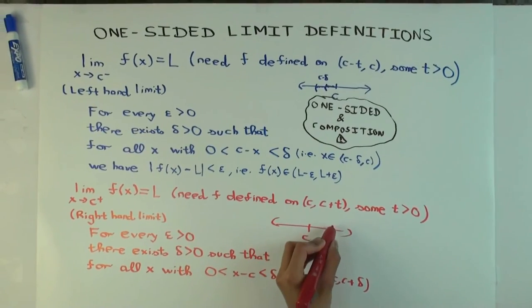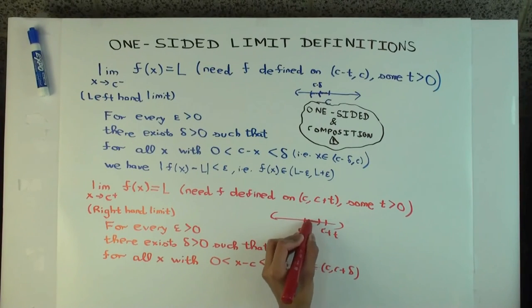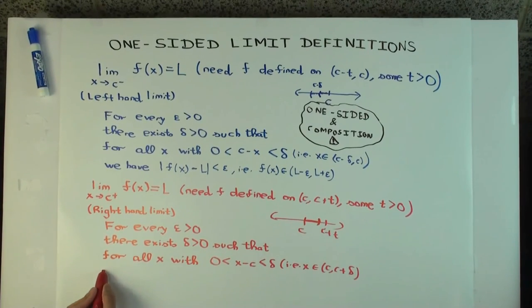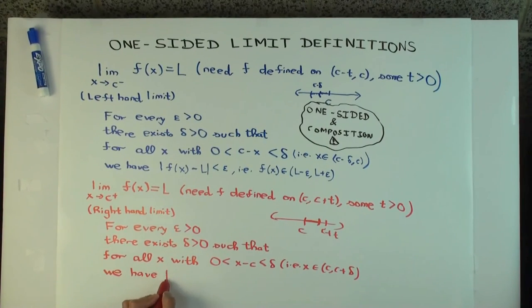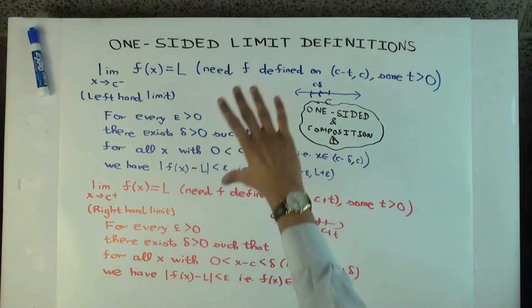So in the picture, the function is defined, say, at c to c plus delta, and you're really saying you can find a delta such that if x is in here. So actually, it's not including c, it's all the points in the immediate right of c. We have... the absolute value of f(x) minus L is less than... f(x). So f(x) is... are we here? We have everything? Yes.